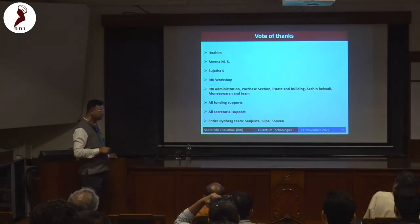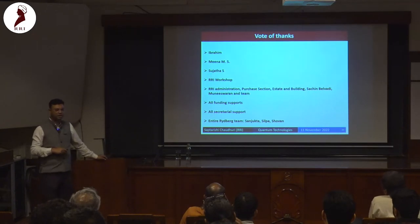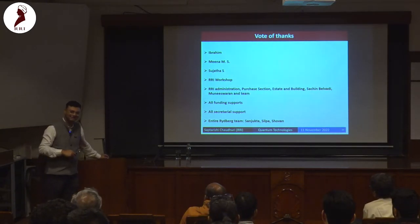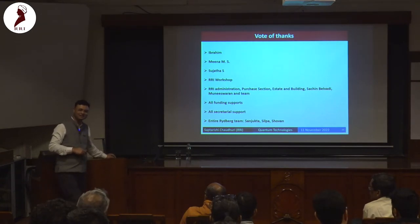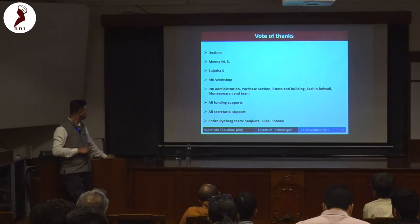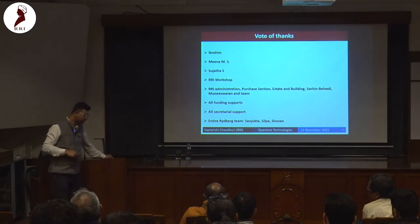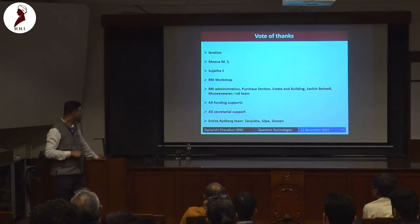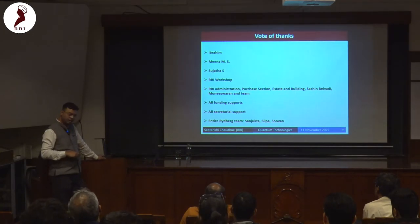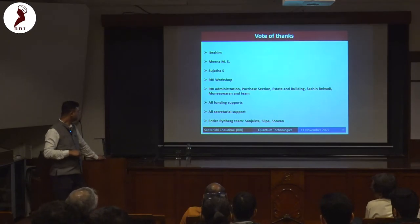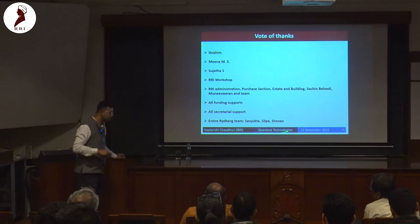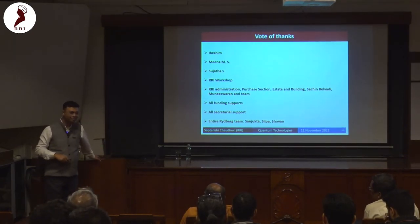I have to thank Ibrahim a lot — RRI did not give me much space and money initially so I had to make practically everything. Ibrahim, Meena, Sujata, and the RRI workshop provided lots of electronics support. Administration, purchase section, estate, building, Sachin, Munishharan — rather than complaining they solved problems. All the funding support, secretarial support, and the fantastic progress in the RRI red-bar team keep us motivated, along with Sanjukta, Shilpa, and Shobhan.